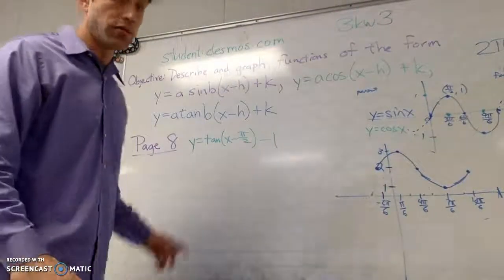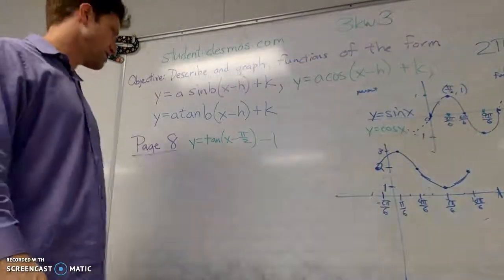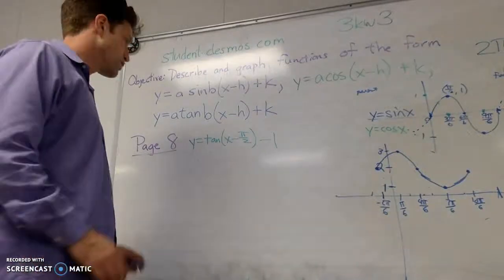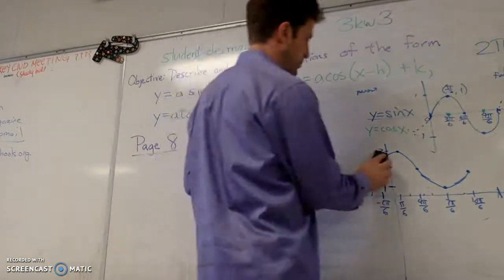The next problem we're looking at is a tan problem: y equals tan of x minus pi over 2, minus 1. Again, we want to keep the parent function in mind.